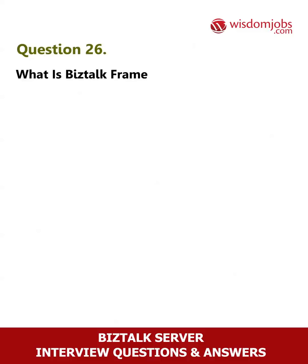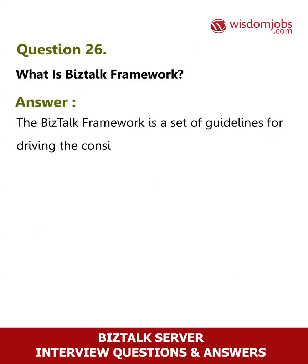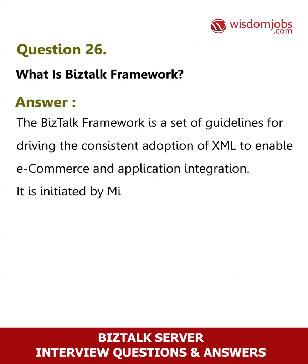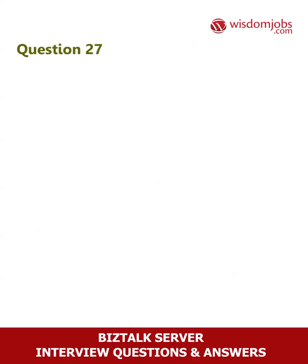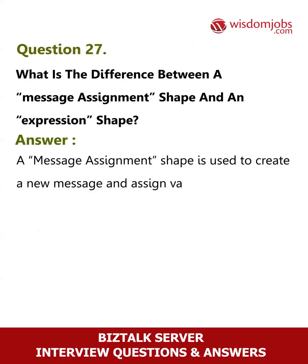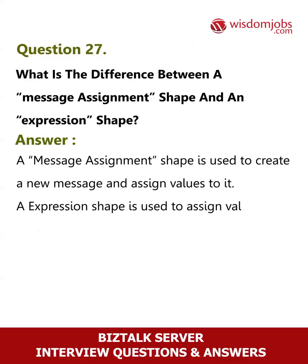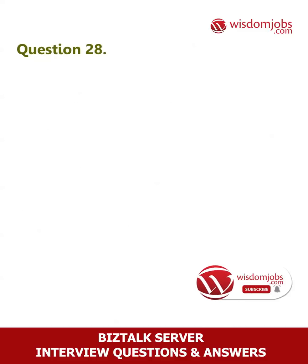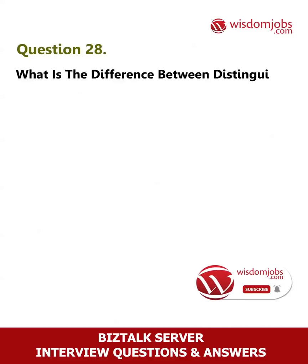Question 26: What is the BizTalk framework? Answer: The BizTalk framework is a set of guidelines for driving the consistent adoption of XML to enable e-commerce and application integration. It is initiated by Microsoft and supported by a wide range of organizations. Question 27: What is the difference between a message assignment shape and an expression shape? Answer: A message assignment shape is used to create a new message and assign values to it. An expression shape is used to assign values to variables and also write if conditions.